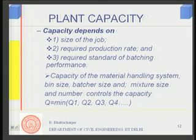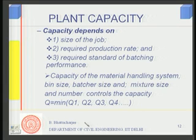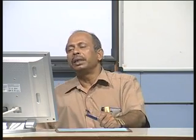Plant capacity is controlled by the capacity of the material handling system, bin size, batcher size, mixer size, and number of mixers. The overall capacity will be the minimum of the individual unit capacities Q1, Q2, Q3, Q4, etc. For the most efficient system, Q1 should equal Q2, Q3, Q4, etc., so that all components are utilized to maximum capacity. That is how plant capacity is decided.